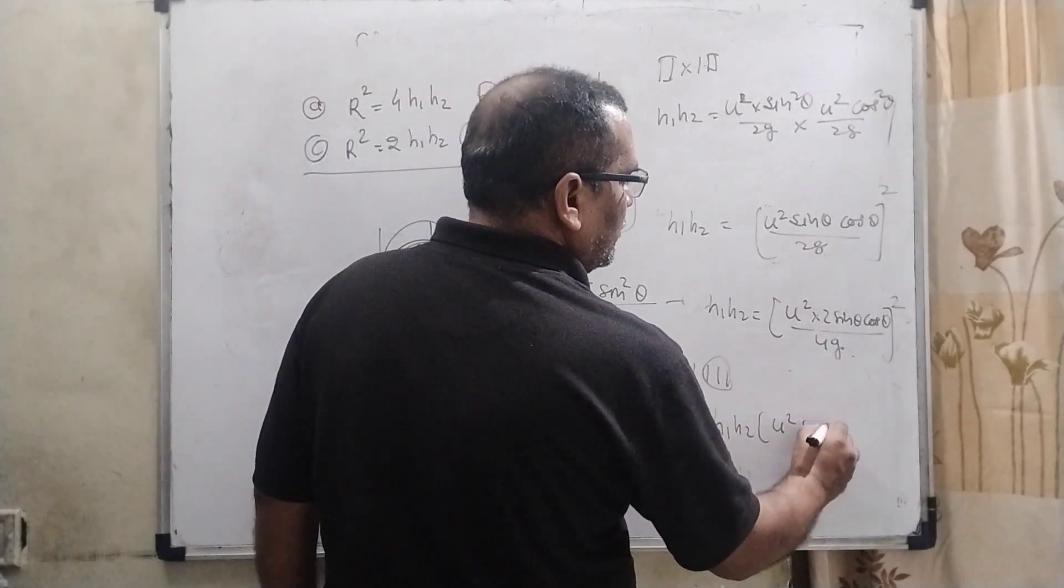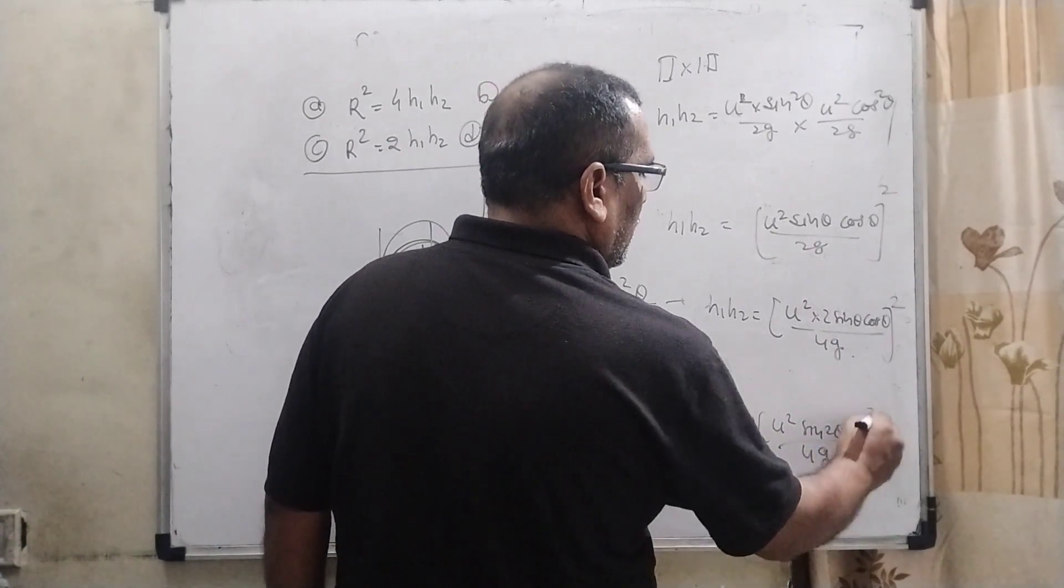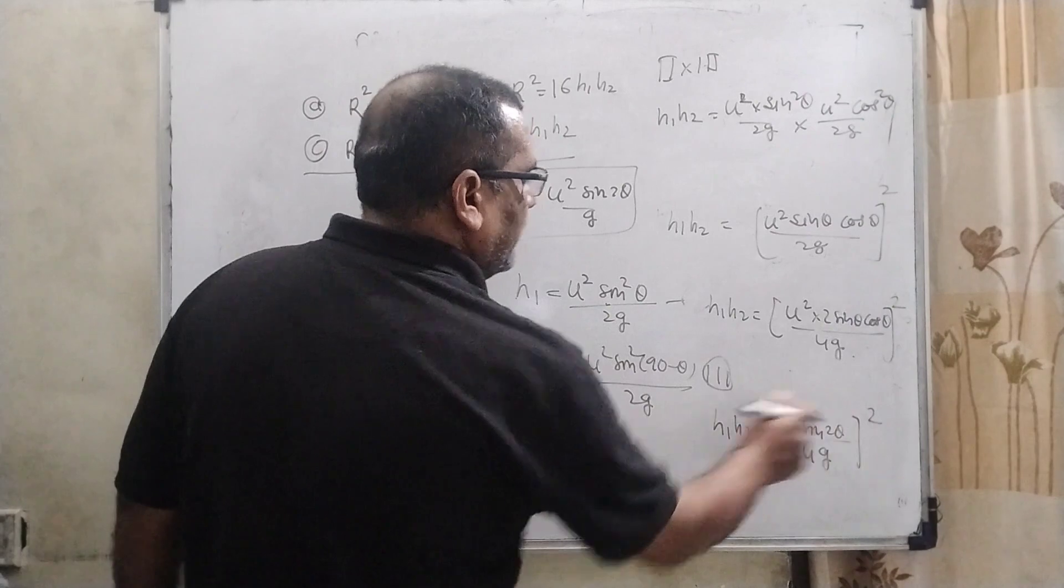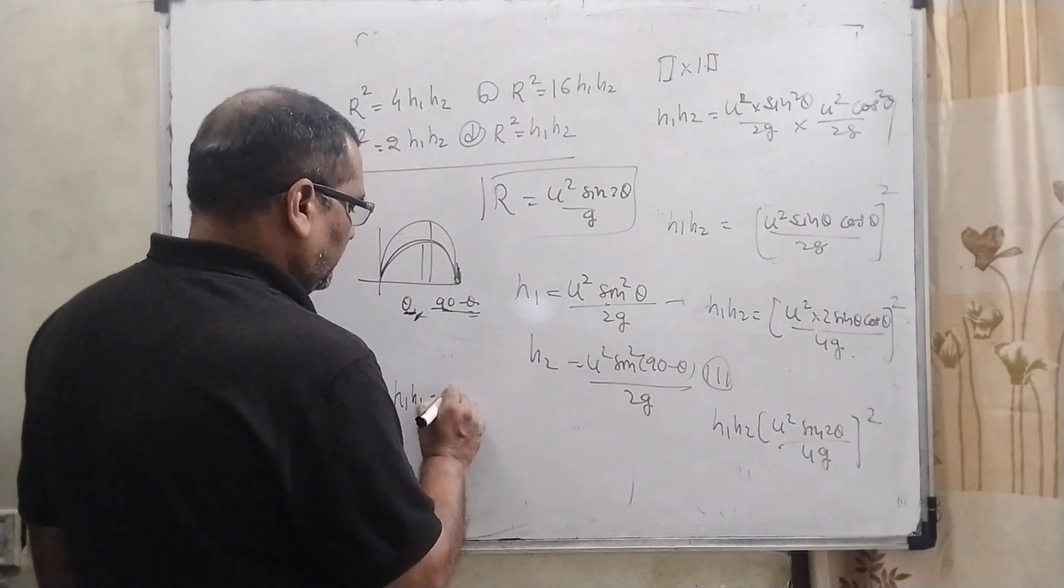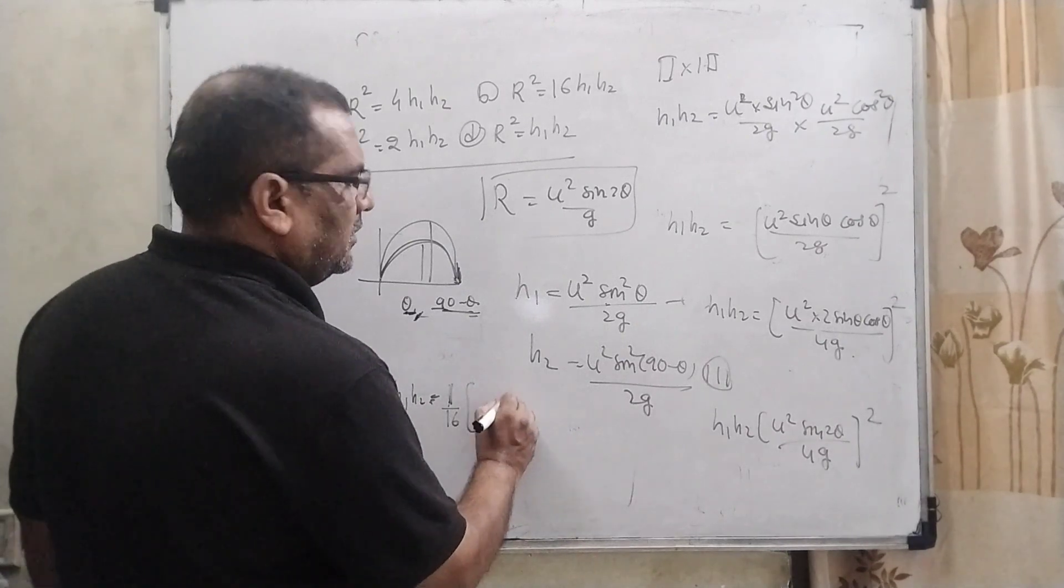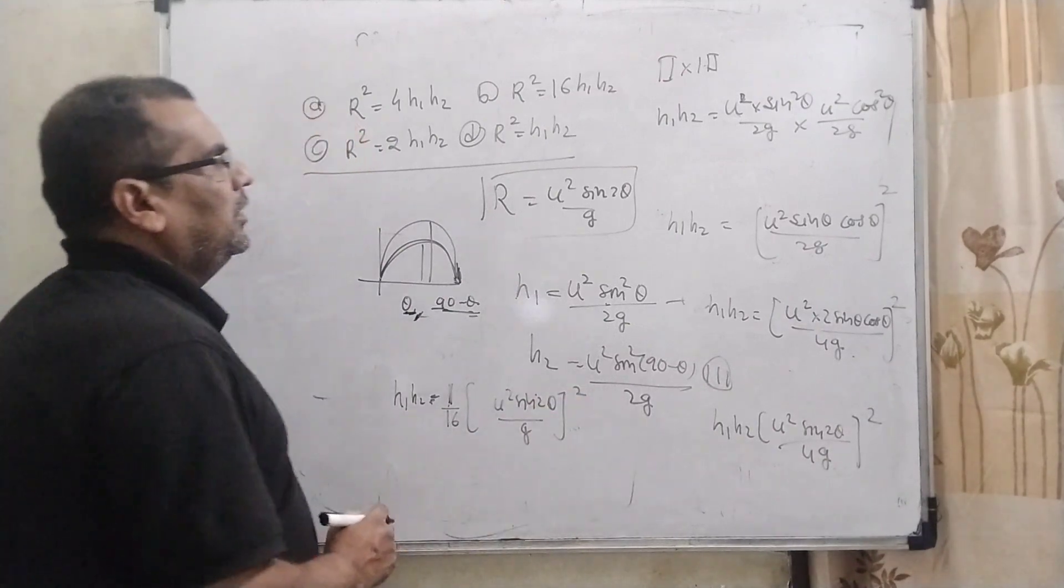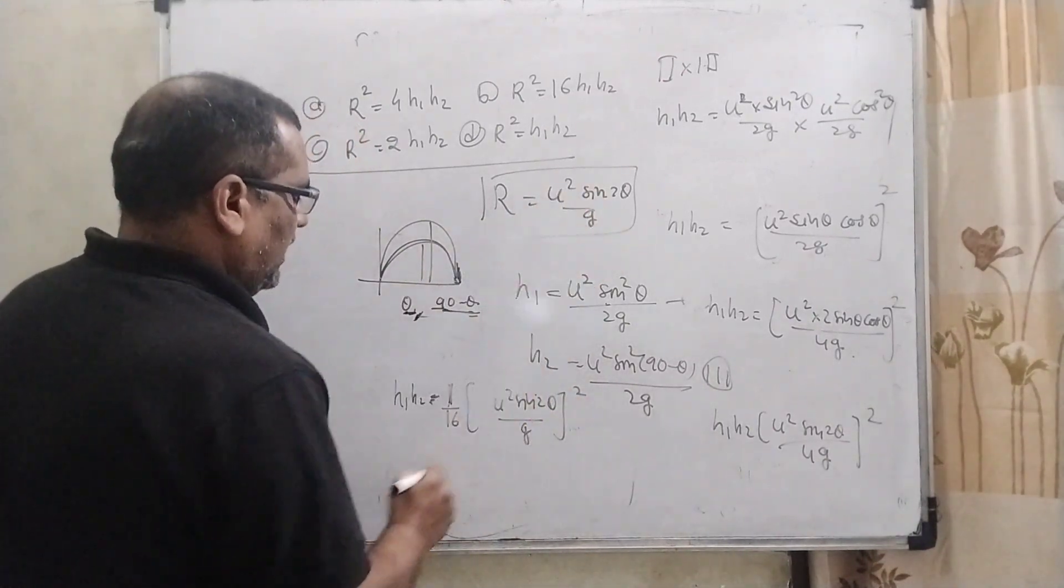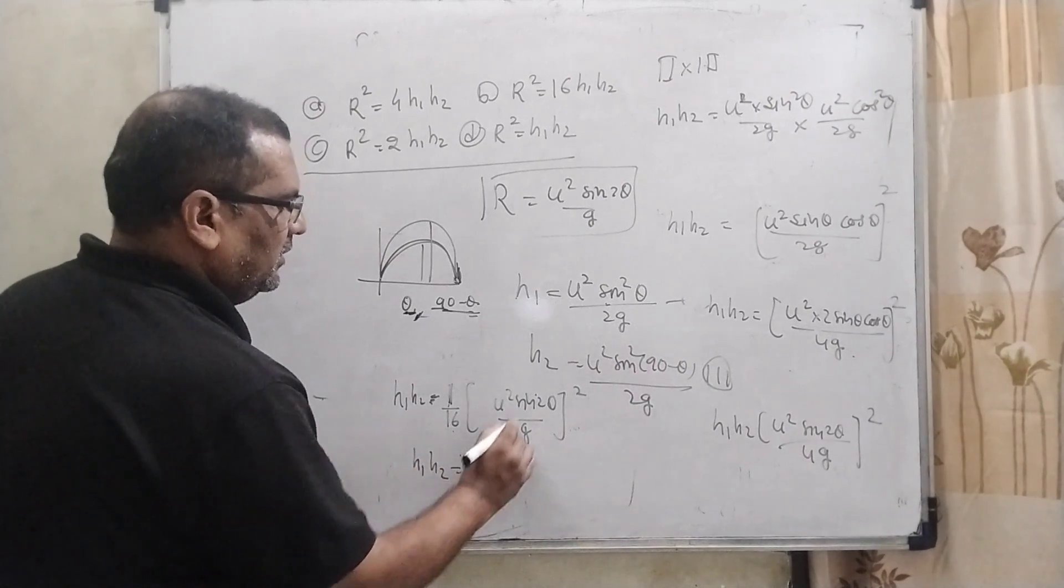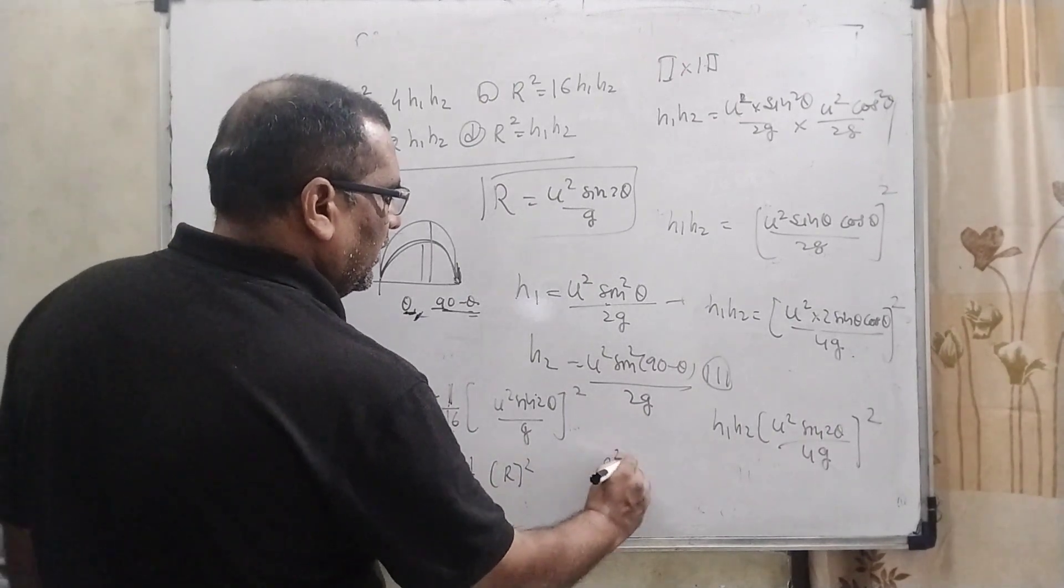Here h1 h2, this 4 squared is 1 by 16, take out from the bracket. Then u square sine 2 theta upon g whole square, we can see that is the r. So h1 h2 equal to 1 by 16 times r square. So final answer is r square equal to 16 h1 h2.